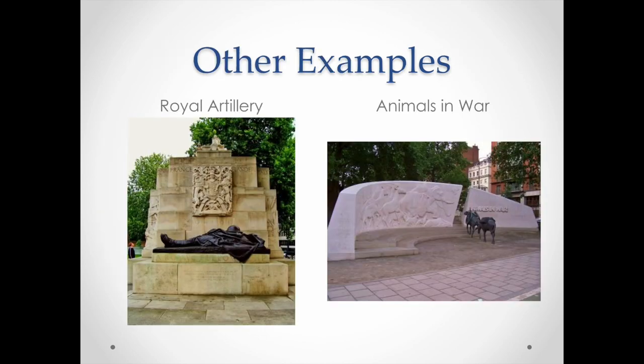You also see other monuments in London, even to animals. Animals — especially in all wars up through World War I — were often used as beasts of burden. There is a monument there, and it says on one side that 'they had no choice.'